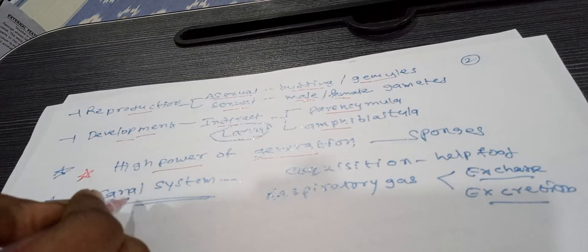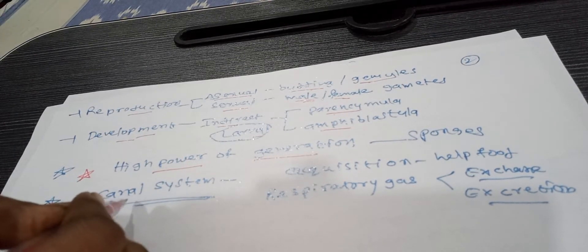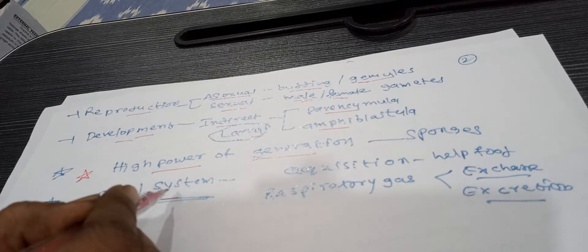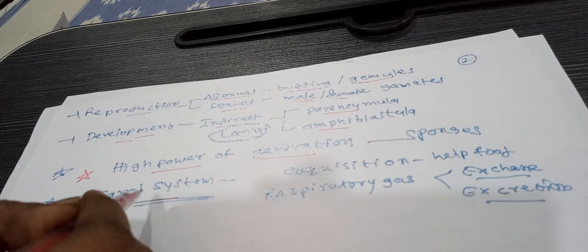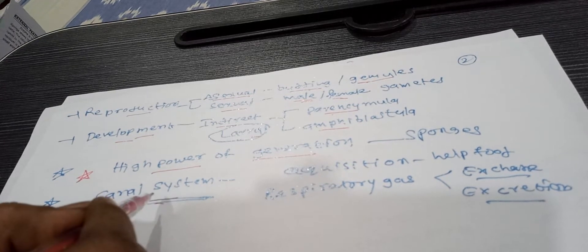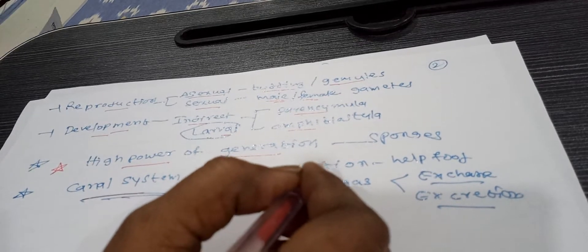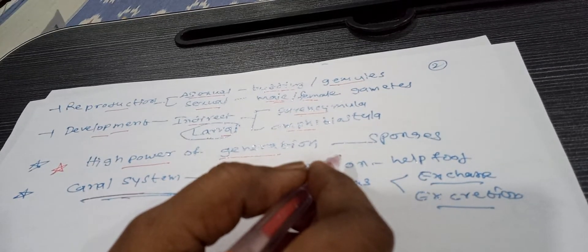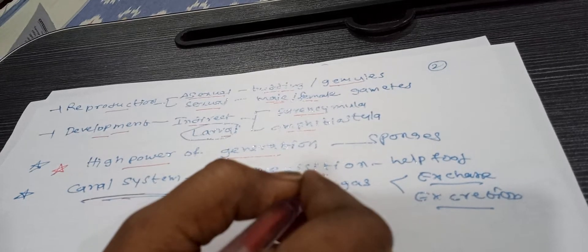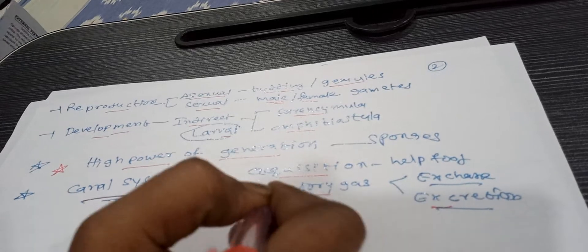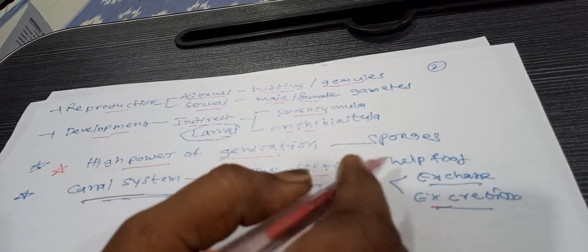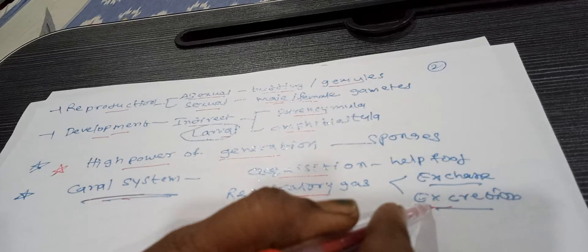The water circulatory system of sponges is called the canal system — this point is very important. It helps in food acquisition, exchange of respiratory gases, and excretion.